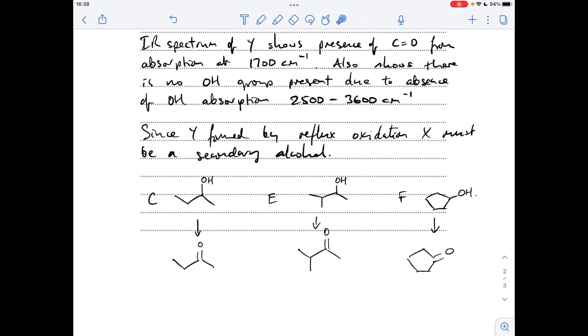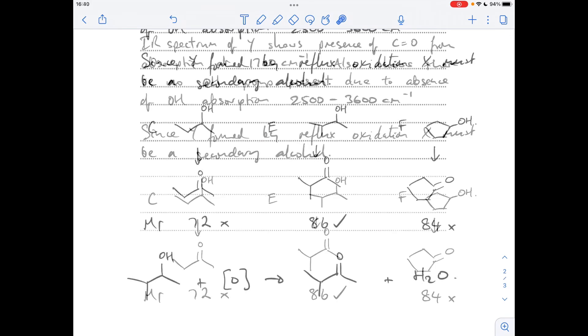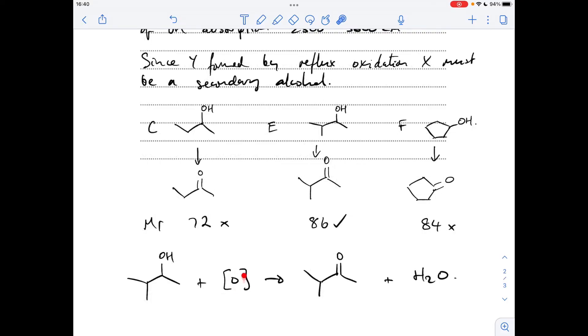So E was the alcohol in question. So the only thing left to do now is write the equation for this oxidation and we'll go back to the mass spectrum and assign one of the fragment peaks. So there's the equation. Just remember to use O in square brackets to represent the oxidizing agent.